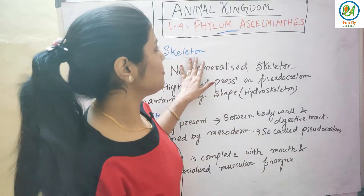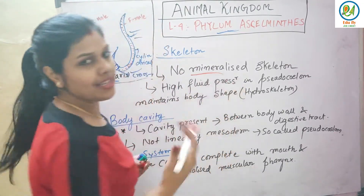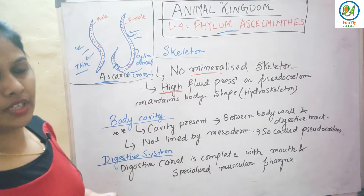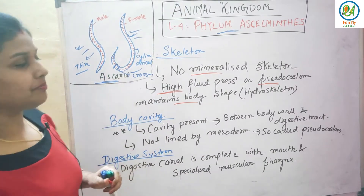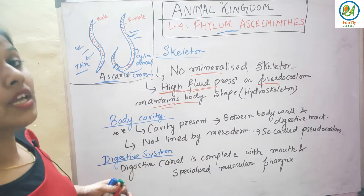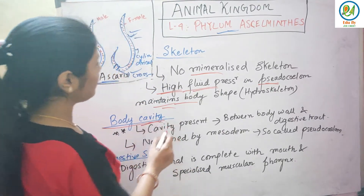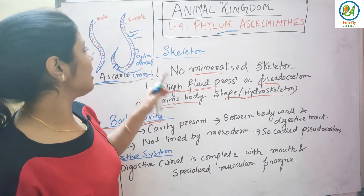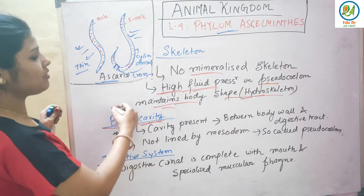Now let's see about the skeleton. What type of skeleton is present in Aschelminthes? There is no mineralized skeleton — no bones, no calcium phosphate. Instead, they have high fluid pressure maintained by the pseudocoelom, which acts as a hydroskeleton. The pseudocoelom maintains the body shape through high internal fluid pressure.